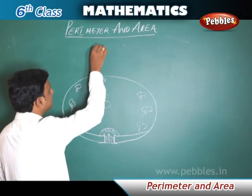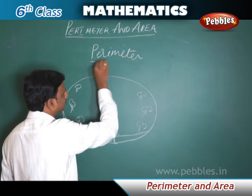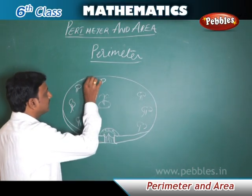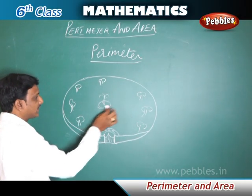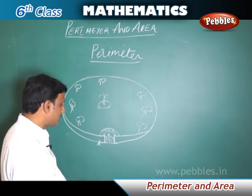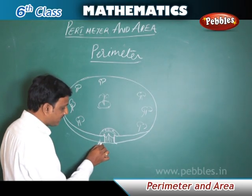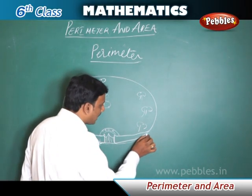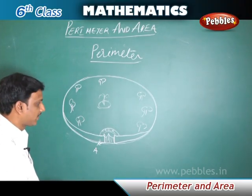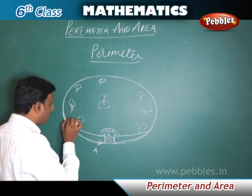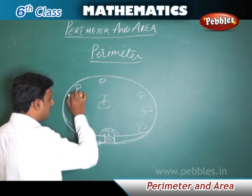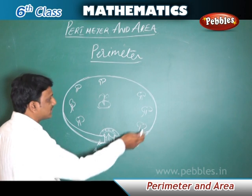First, let us understand what is perimeter. Let us take a closed figure. Here there is a park, and this park has got a boundary wall. There is a boy who is running around the park. The boy started at a point A and he travelled along the boundary of the park and finally reached the same point A. The distance travelled or the distance covered by the boy is called perimeter.